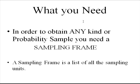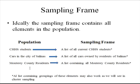What is a sampling frame? It is a list of all the sampling units in the population — a list that contains all the elements in the population, or groupings of these elements. For example, if you were studying CHHS students as your population, then your sampling frame would contain a list of all current CHHS students, or groupings of these students.